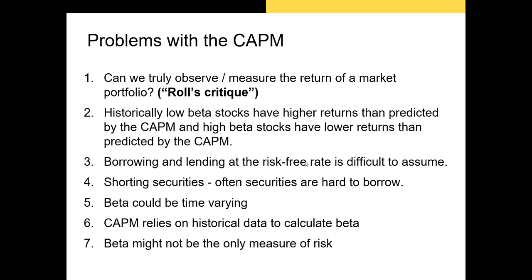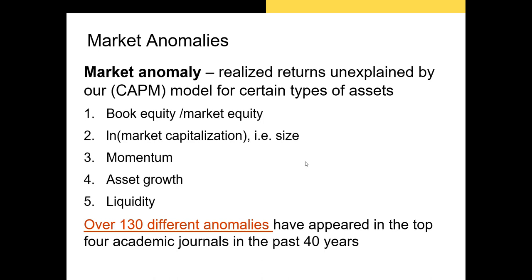Finally, beta might not be the only measure of risk that's priced. There could be other risk factors besides market risk or undiversifiable risk that are factored into the share price. With all of the problems the CAPM has, it's understandable to believe there might be a way for some securities with specific characteristics to outperform others. When we find a security's return outperforms or underperforms the expected return calculated using the CAPM, we potentially have what's called a market anomaly — found when securities with a specific characteristic consistently have an alpha that's statistically significantly different from zero.